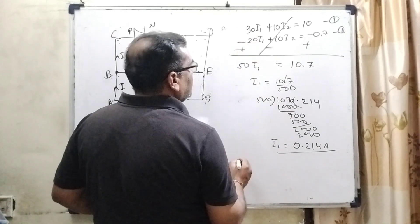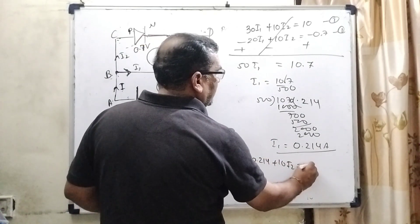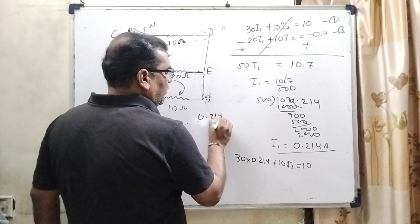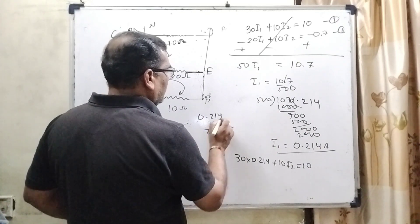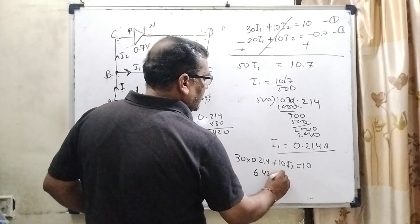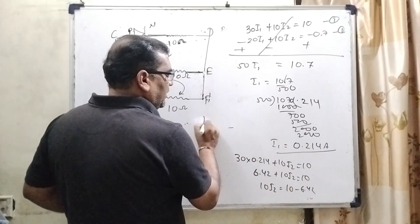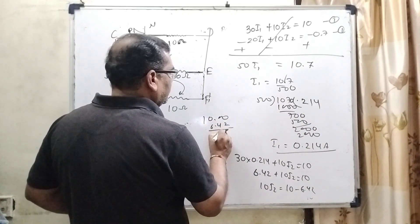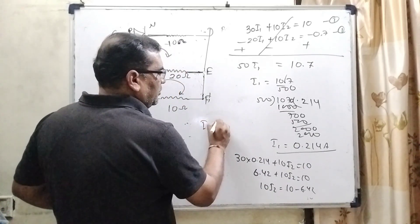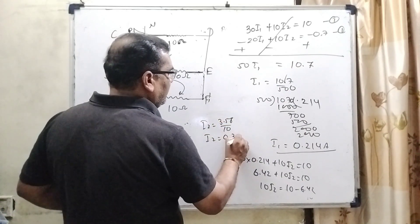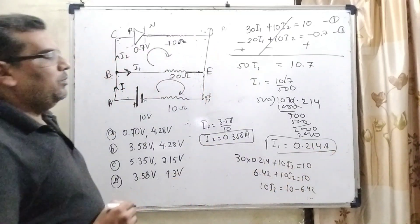Now substitute this value of I1 in the first equation: 30 times 0.214 plus 10I2 equals 10. So here we get 6.42. 6.42 plus 10I2 equals 10. Then 10I2 equals 10 minus 6.42, that is 3.58. So here I2 equals 3.58 divided by 10. Then I2 is equal to 0.358 ampere. So here we get two currents: I1 0.214 ampere and I2 0.358 ampere.